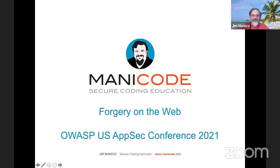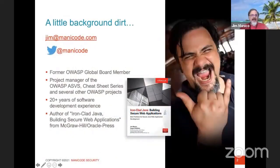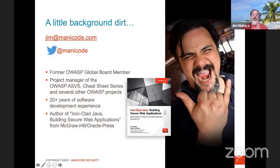Cross-site request forgery is no longer part of the OWASP Top 10, and it's kind of mislabeled in ASVS as an access control problem. With the advent of new standards to address request forgery, we're talking about it less. But I still think it's a really important problem — I watched a couple of my customers get hit by CSRF in a really damaging way. My name is Jim Manico, I'm an application security instructor and founder of manacode.com. I've been a former board member at OWASP and co-manage the ASVS and the Cheat Sheet Series.